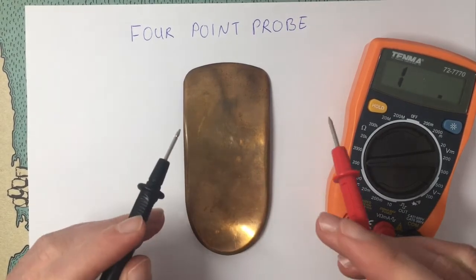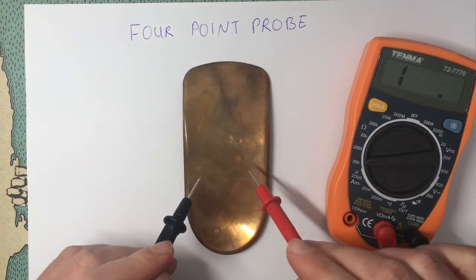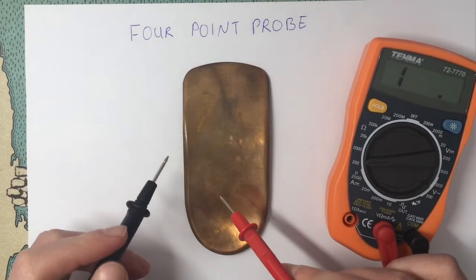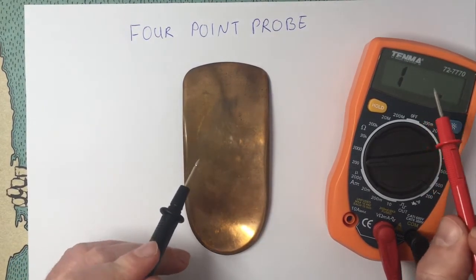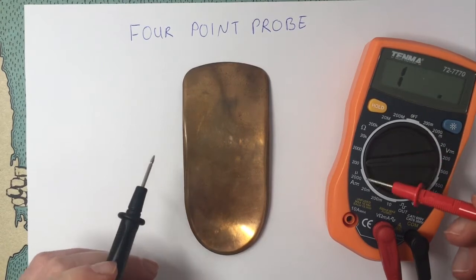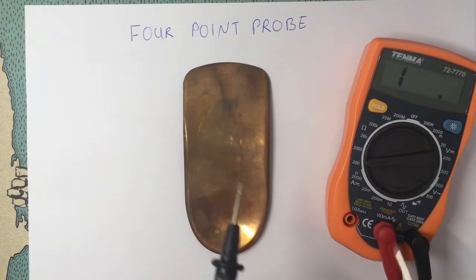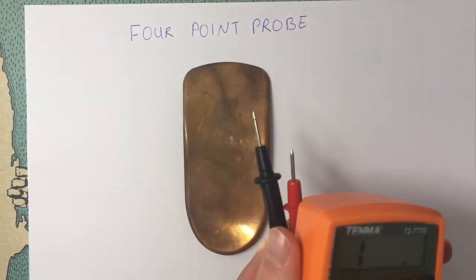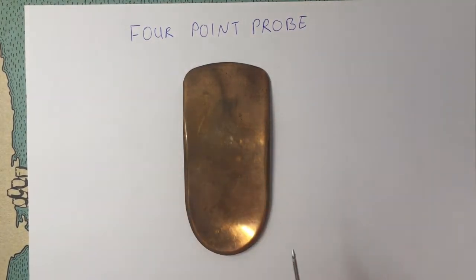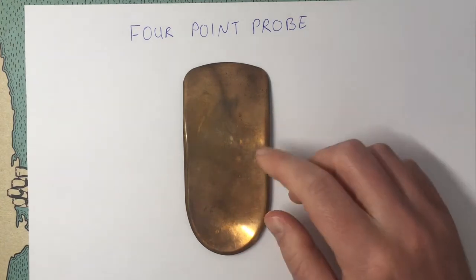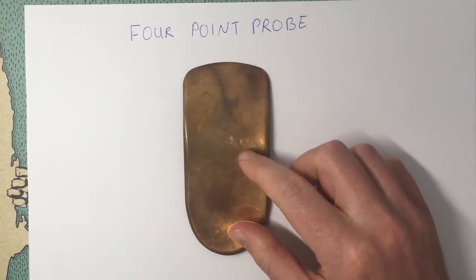So depending on how hard I press down these probes, the resistance that we measure varies by a factor of over a million. So you can see that this is a massive problem for knowing what the actual resistance of this piece of copper is.